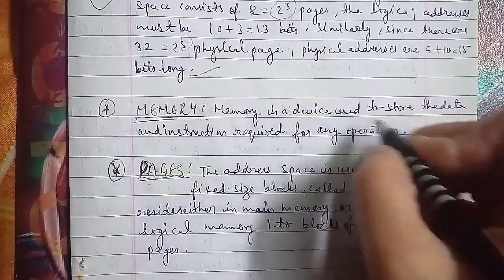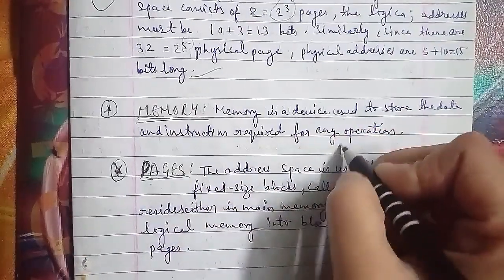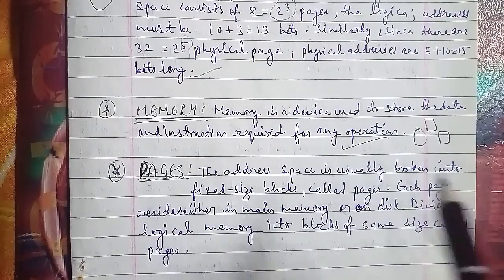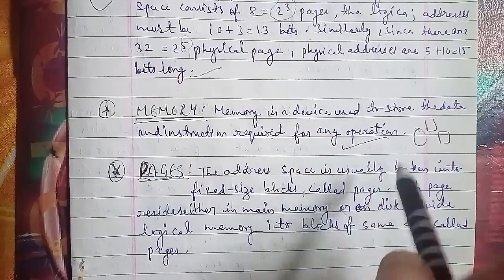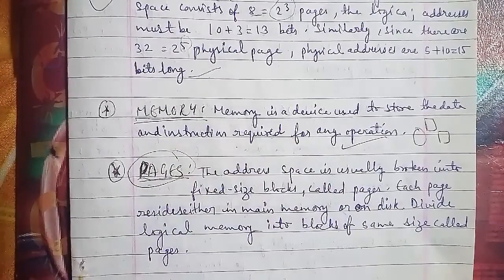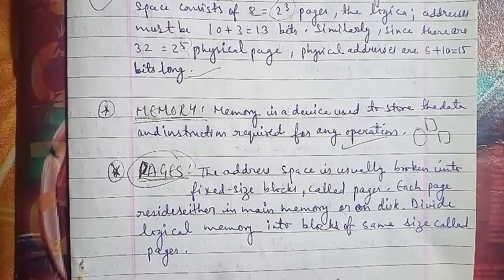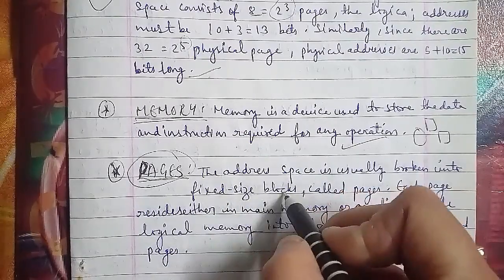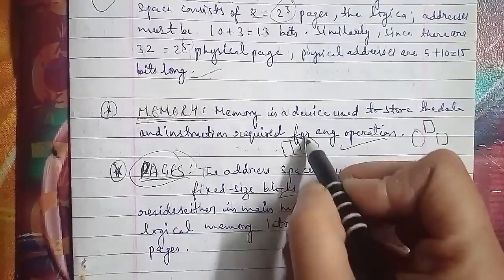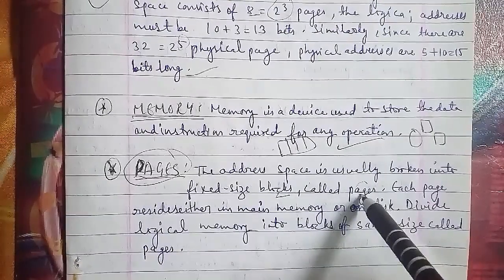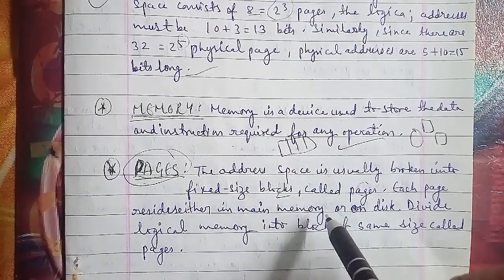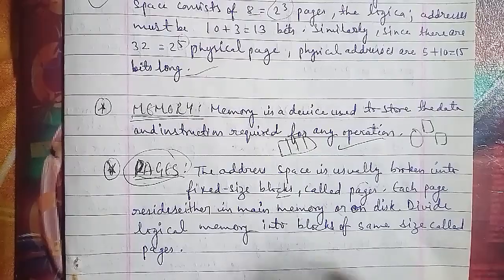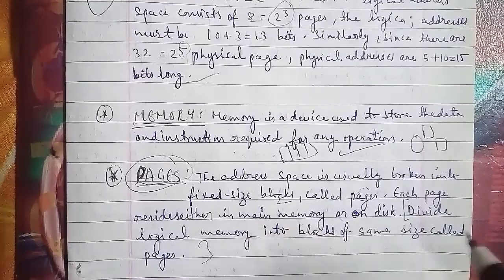Pages: the address space is usually broken into fixed-size blocks called pages. Each page resides either in main memory or disk. Logical memory is divided into blocks of the same size called pages. If asked about pages, write that the address space is broken into fixed-size blocks called pages and each block resides in either memory or disk.